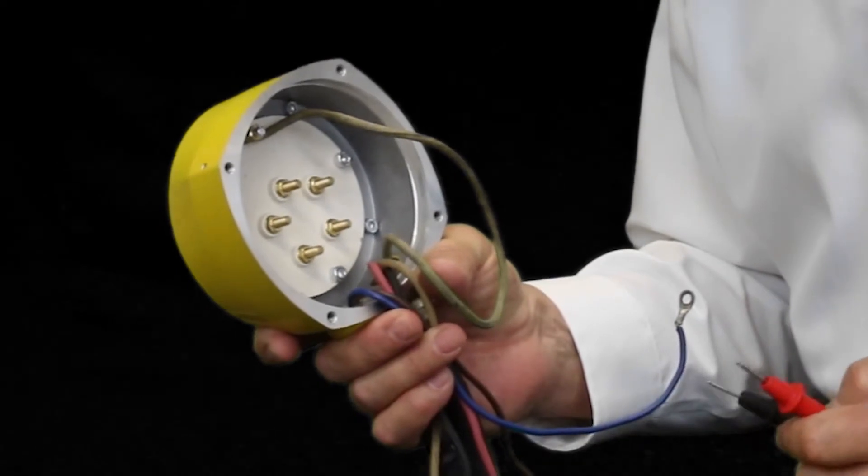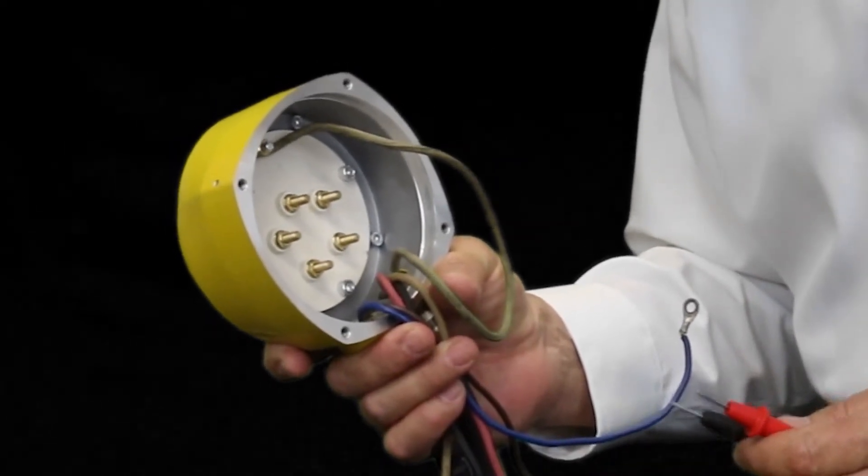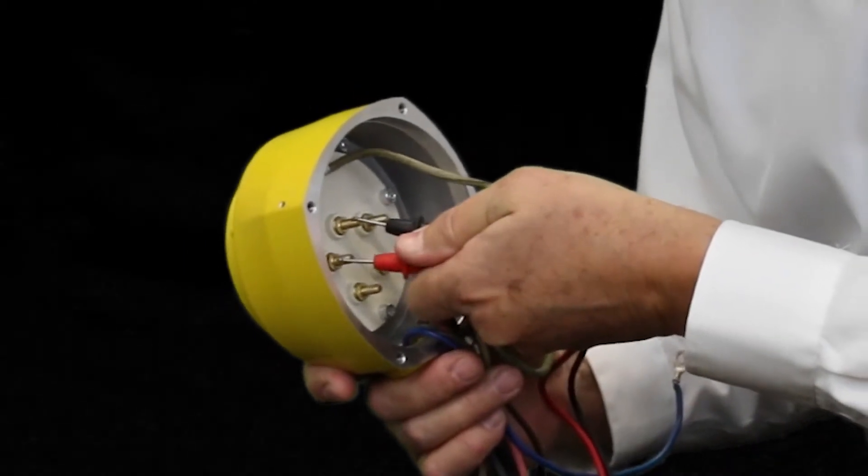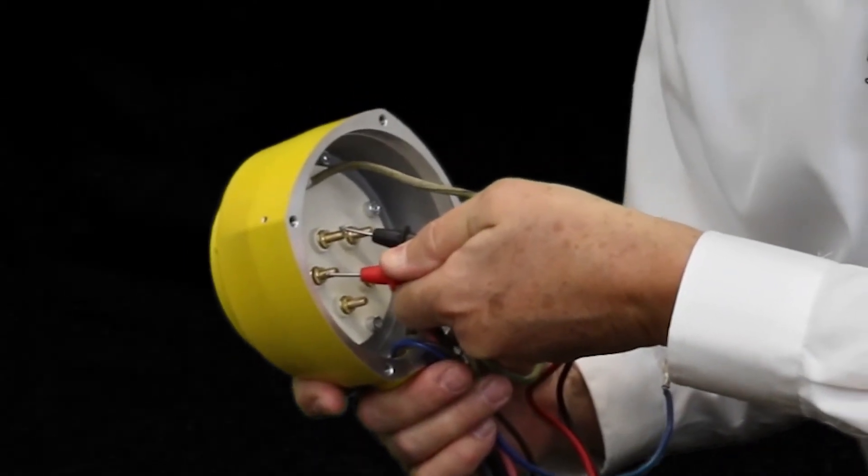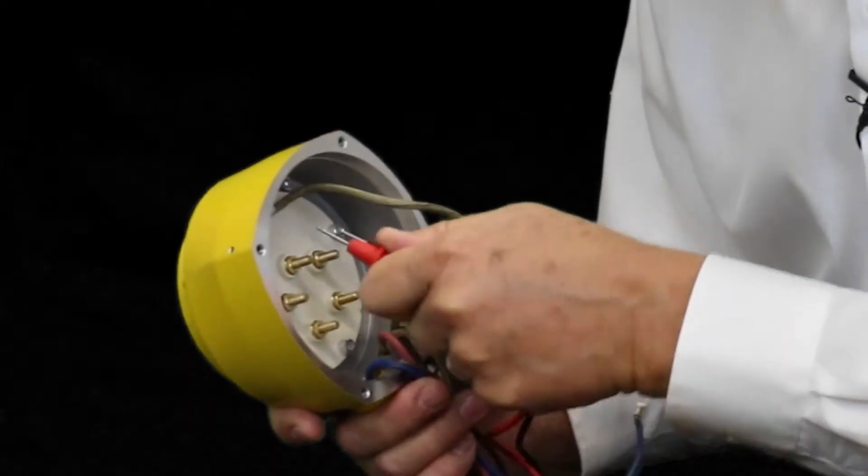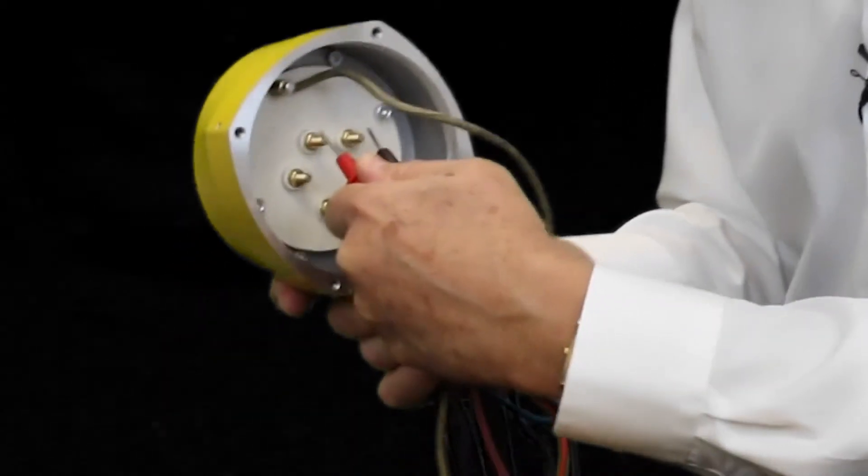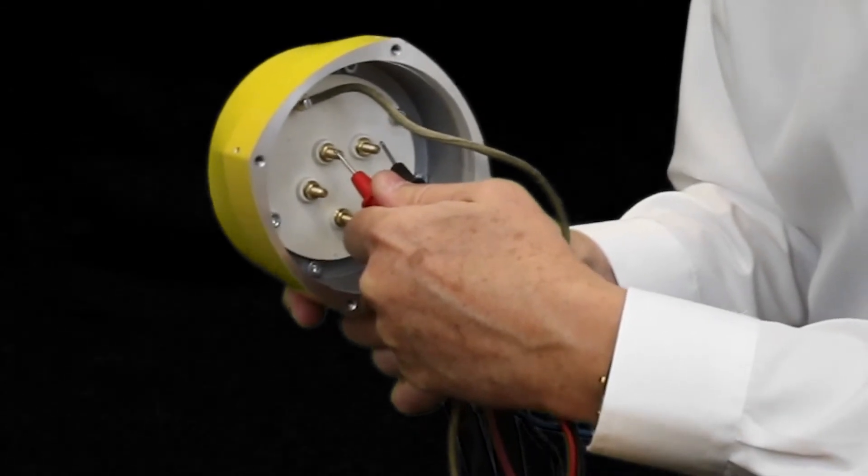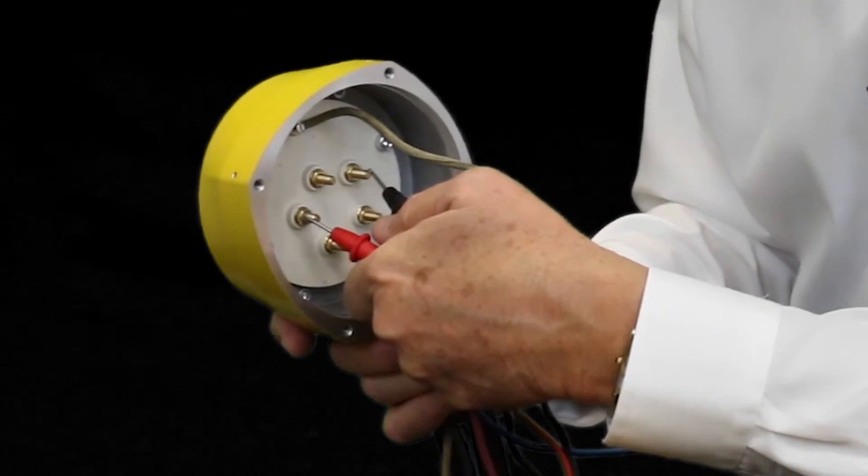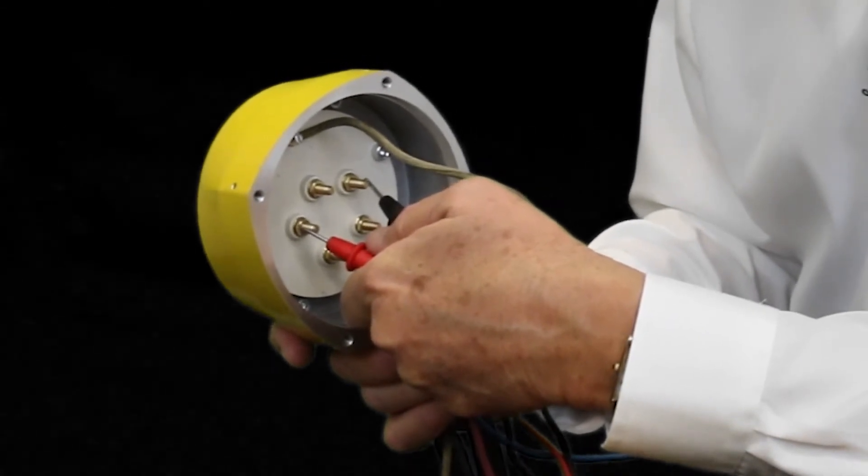We set the probes between U and V to check the resistance in phase one. V and W to check the resistance in phase two. And U and W to check the resistance in phase three.